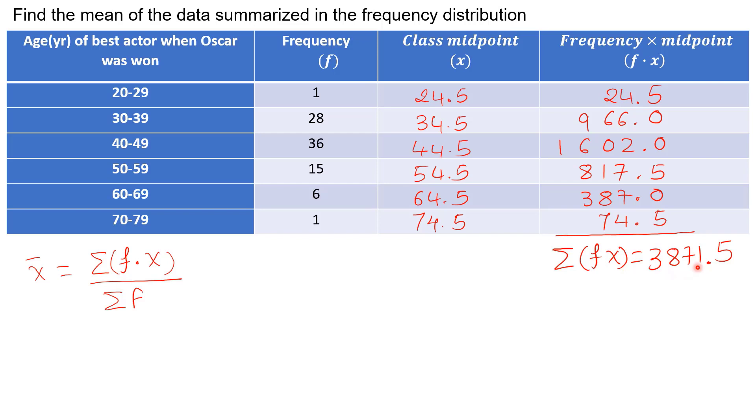Plug this value into the formula and find the sum of the frequencies. That means add up all the frequencies. So the sum of the frequencies is equal to 87. So when we plug this in, we get 3871.5 divided by 87, which is equal to 44.5 years.